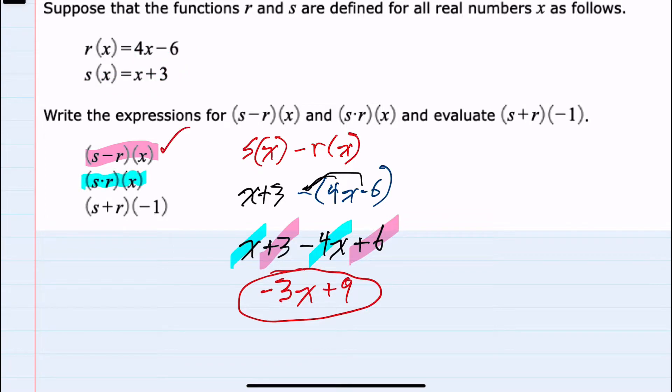Moving now to s times r of x, this we can rewrite as s of x times r of x. So multiplying these two functions we would start with s of x, which is x plus 3,